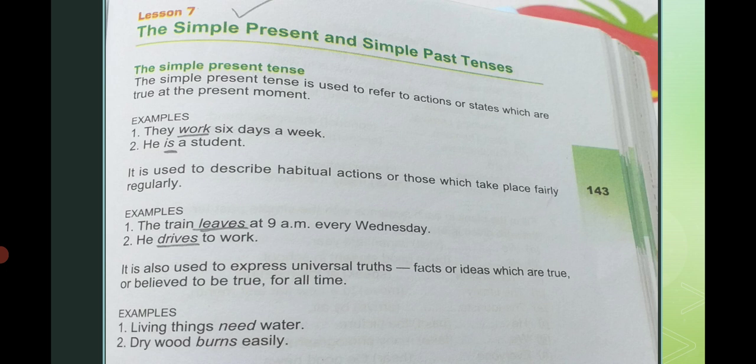جیسا کہ ہم صبح سکول جاتے ہیں، بچے جماعت میں پڑھتے ہیں، میری امی کھانا پکاتی ہیں۔ یہ وہ کام ہے جو ہم اپنے present moment میں کرتے ہیں۔ Examples: 'They work six days a week' — وہ ہفتے میں چھے دن کام کرتے ہیں۔ 'He is our student' — وہ طالب علم ہے۔ یہاں work اور is ہمارے action verbs کو شو کر رہے ہیں۔ Work action verb ہے اور is helping verb کہلاتا ہے۔